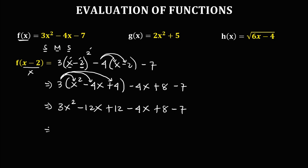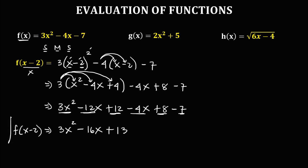Combining like terms, starting with the highest exponent: we have 3x squared. For the x terms: negative 12x and negative 4x — same sign, so copy the sign and add — giving negative 16x. For the constants: 12 plus 8 is 20, and 20 minus 7 is positive 13. Therefore, f of x minus 2 is equal to 3x squared minus 16x plus 13.